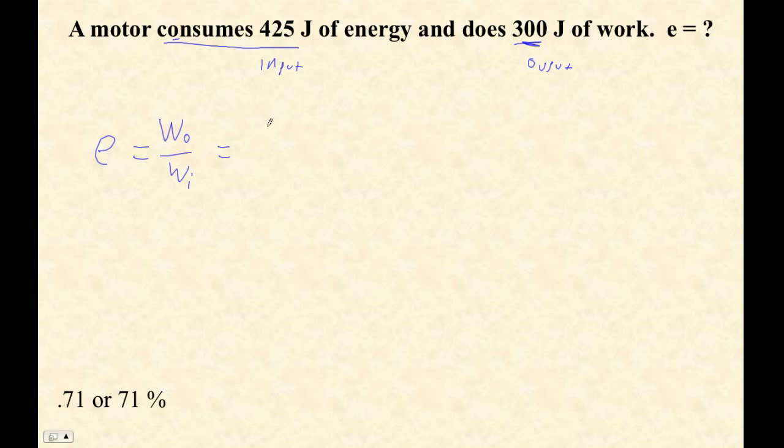So let's see. We're going to divide small number by big number. So 300 joules of output. It does that. Divide it by 425 joules input. So that's going to be 300 divided by 425. It is 0.70588.